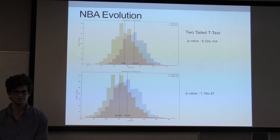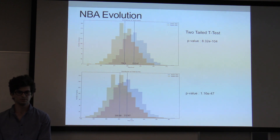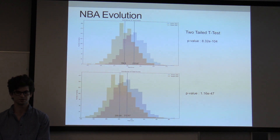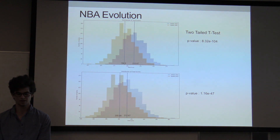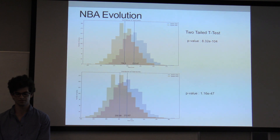The NBA has been evolving a lot recently, becoming more of a scoring league. I wanted to look at these differences. I used a two-tailed test on distributions from the total scores of 2005 compared to 2018, and then 2010 compared to 2018. Both showed significant differences in distribution, and it also showed that the play has been diverging to a more score-heavy league.